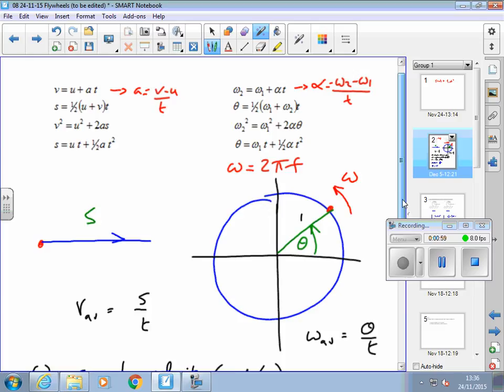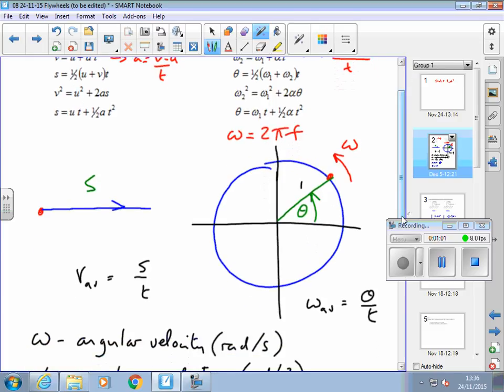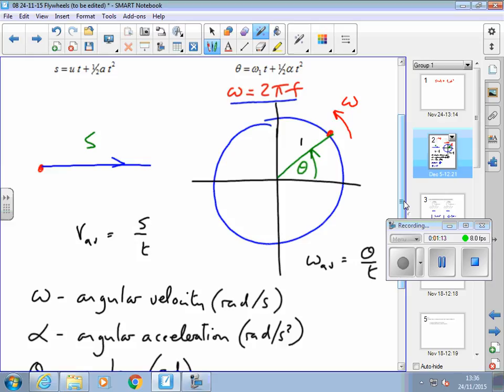We had also these other formulae that are useful that we've got on our formula sheet, the relationship with angular velocity we might need to know. The average angular velocity is the total angle turned through divided by the time that took, and the equivalent in linear, the average velocity is the total displacement divided by the time.